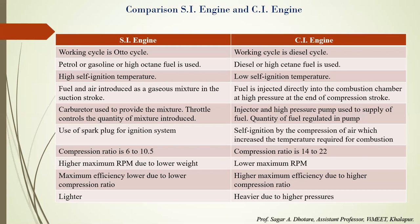In SI engines, the compression ratio achieved is 6 to 10.5; in CI engines, it is 14 to 22. SI engines achieve higher maximum RPM due to lower weight; CI engines have lower maximum RPM due to higher weight. SI engines have lower maximum efficiency due to the lower compression ratio; CI engines have higher efficiency due to higher compression ratio. SI engine components are fewer, making it lighter compared to CI engines, which have more components and are therefore heavier.